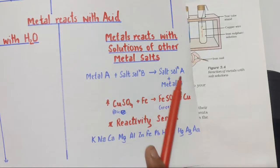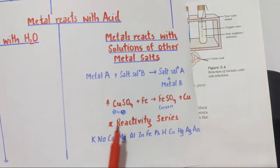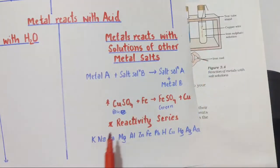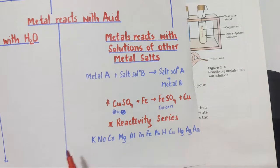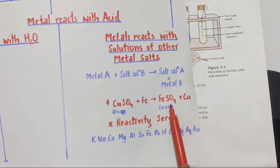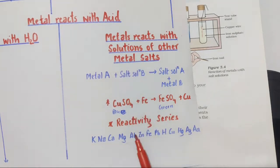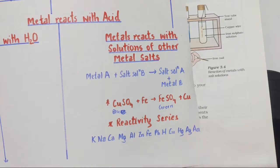Last part: when metal reacts with a solution of another metal salt, they form a new salt solution and the less reactive metal is displaced. An important example given in the activity: CuSO₄ + Fe → FeSO₄ + Cu. Key observation: the blue color of CuSO₄ changes to green (FeSO₄). All these reactions are based on the reactivity series, which is already uploaded for you to learn.